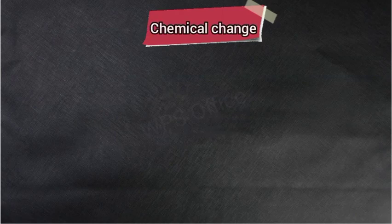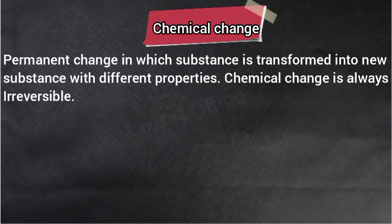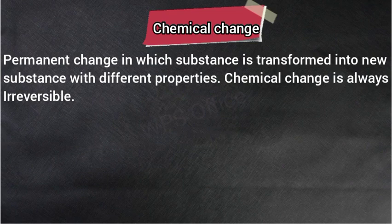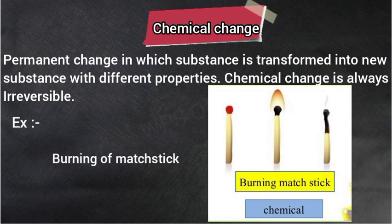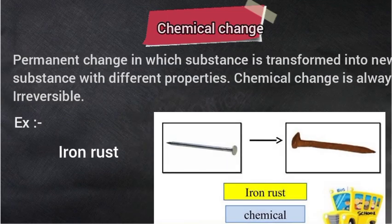And the next is chemical change — यानि रासायनिक परिवर्तन. Permanent change in which a substance is transformed into a new substance. ऐसा स्थायी परिवर्तन जिसमें कोई भी पदार्थ एक नए पदार्थ में बिलकुल बदल जाता है, with different properties — और उसके गुण भी अलग-अलग हो जाते हैं जो initial substance से भिन्न होते हैं. Chemical change is always irreversible — रासायनिक परिवर्तन हमेशा irreversible होते हैं. For example: burning of matchstick — माचिस की तीली का जलना; toasting of bread — bread को सेंकना; iron rust — लोहे में जंग लगना.